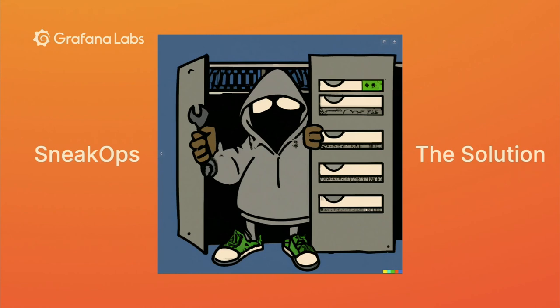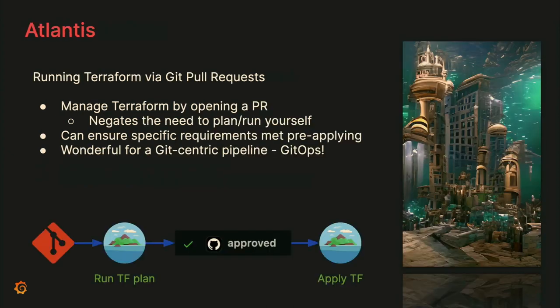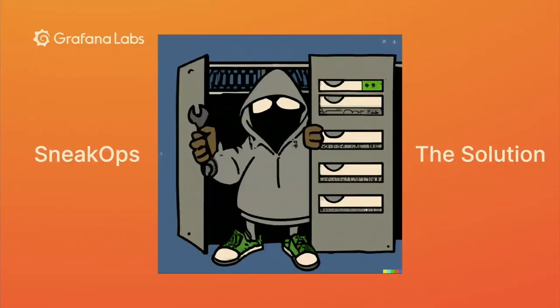All these pieces of artwork in the background are from various AI art generation tools. We asked it for things like GitHub Actions, which created a very strange image with a fox wave, and this is what it came up with for Atlantis — it very much looks like Rapture from Bioshock. This one for Sneak Ops shows a very shaky character in your data center, which seemed perfect.